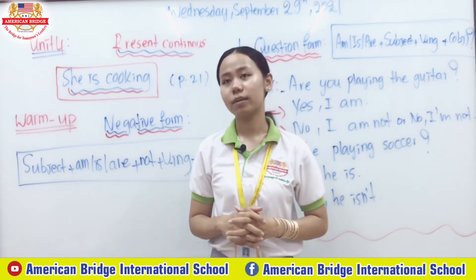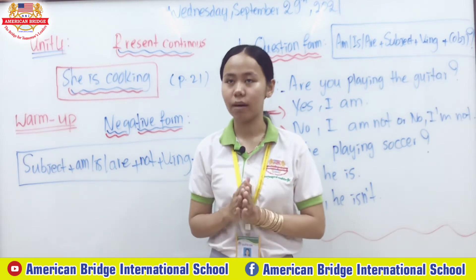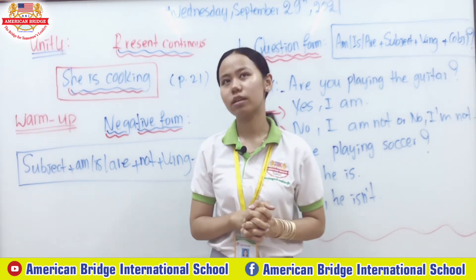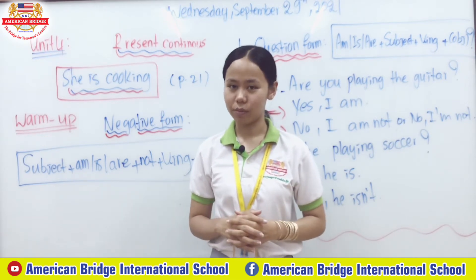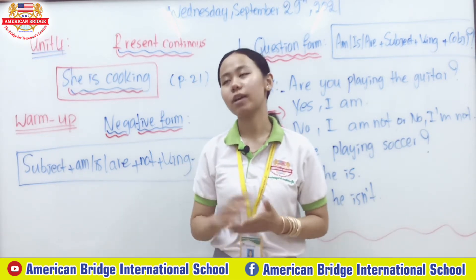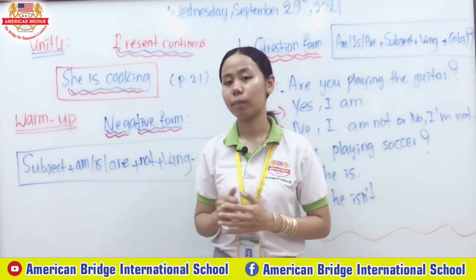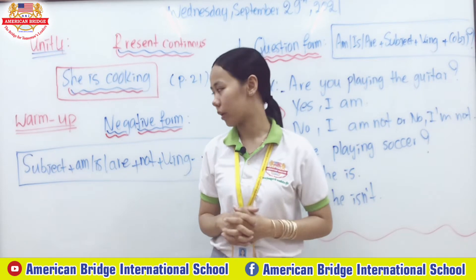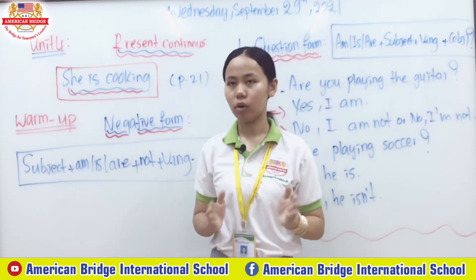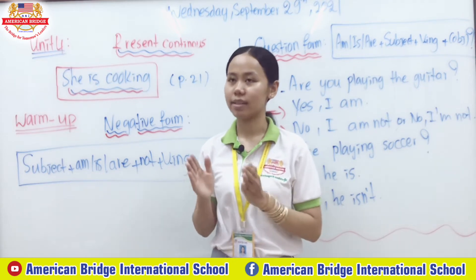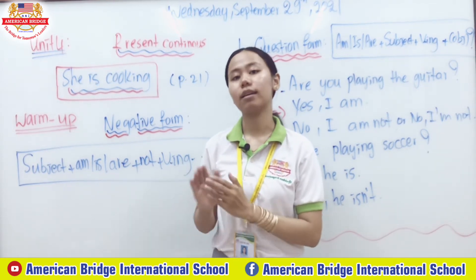Last week we learned about the positive or affirmative and negative forms of the present continuous. Let us review the negative form. We have a formula: Subject + am/is/are + not + verb-ing + object (which is optional). You can also look at my board here — for the negative form: subject plus am/is/are (the verb to be) plus not, then verb-ing.